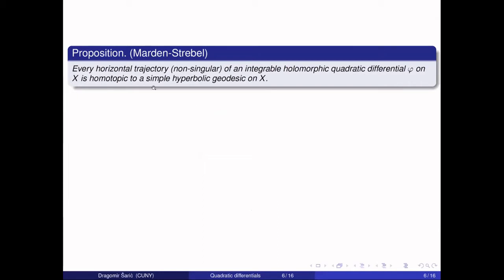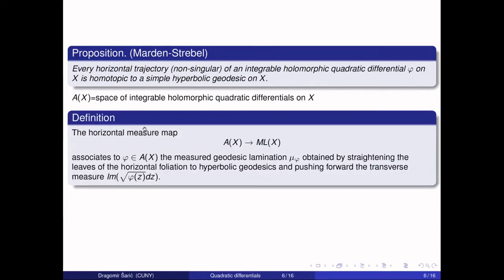There is a proposition by Marden and Strebel which says that every horizontal trajectory that is not singular for an integrable holomorphic differential can be straightened to a simple hyperbolic geodesic on the surface. This is not immediately clear because the surface is infinite, but because the differential is assumed integrable, it is true. If you take A(X) to be the space of all integrable holomorphic differentials on X, you can define a horizontal measure map which takes an integrable differential phi and straightens each of its horizontal leaves to geodesic lamination, then pushes forward the transverse measure of the horizontal foliation to get a measured lamination. This map from the space of integrable holomorphic differentials into measured laminations is injective.